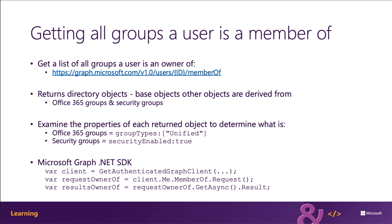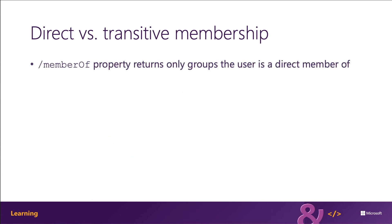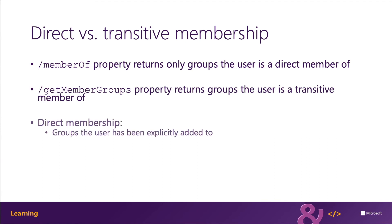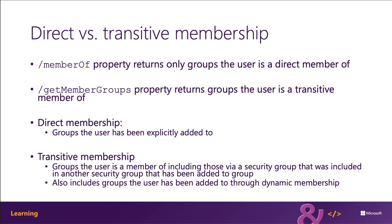The same request can be done using the Microsoft Graph .NET SDK, as shown in the code at the bottom of the slide, using the memberOf property. Unlike the previous example, the memberOf property returns a collection of directory objects that the user is a direct member of — these are groups that the user has been explicitly added to. Microsoft Graph can also return a list of all directory objects that a user is a transitive member of. These are groups the user hasn't been directly added to, but is a member of through a nested security group — for example, if the user is in a security group that's been added to another group, or is a member through dynamic membership.